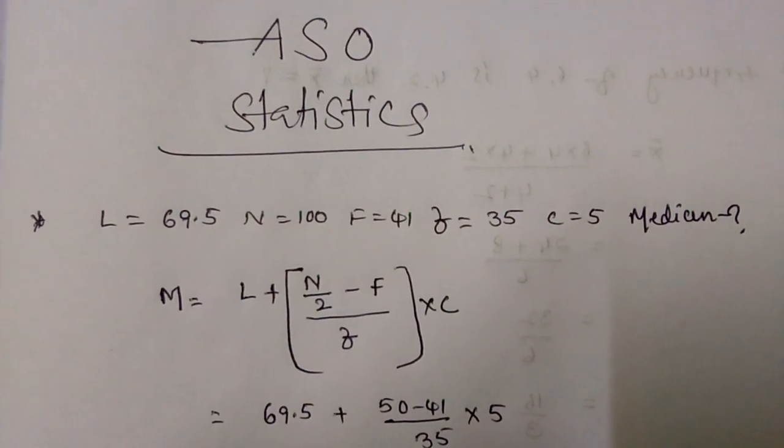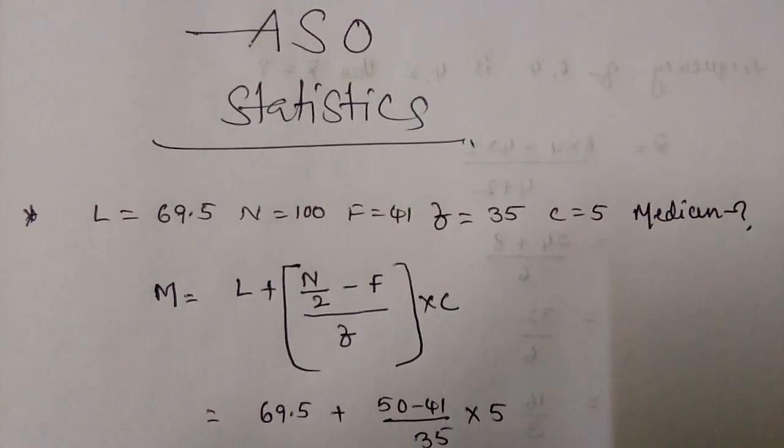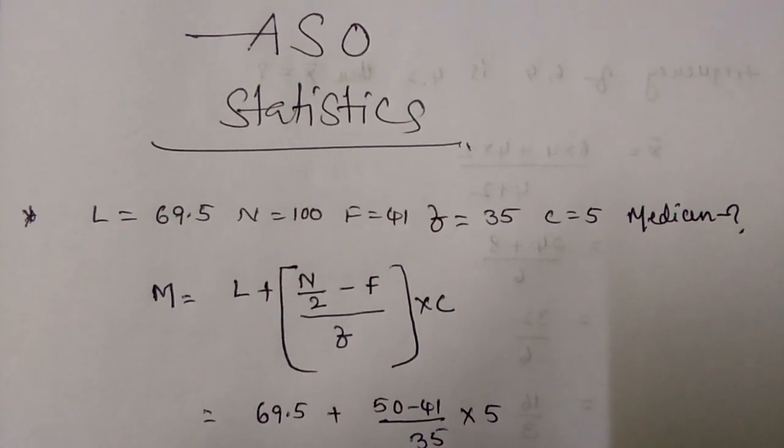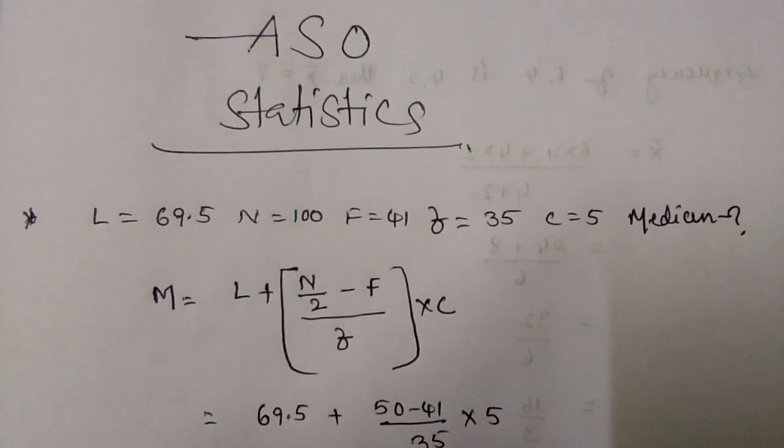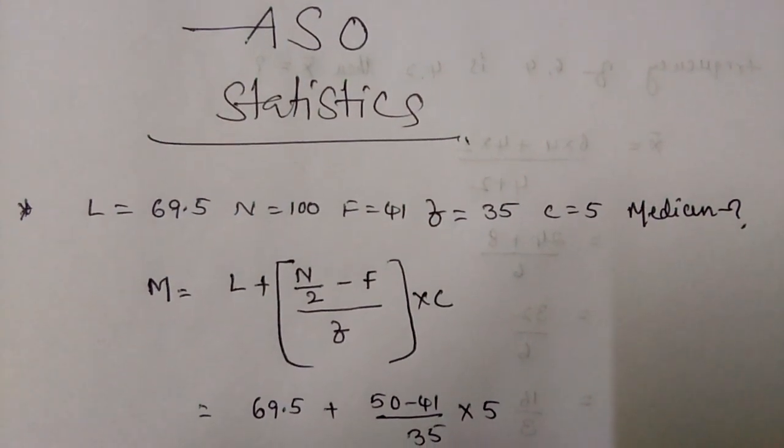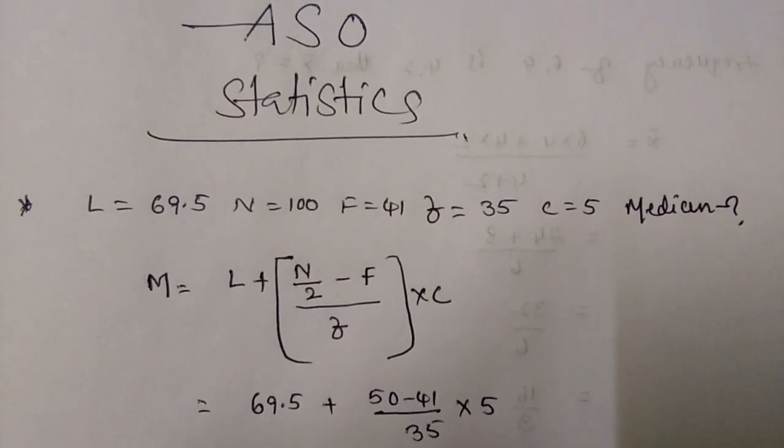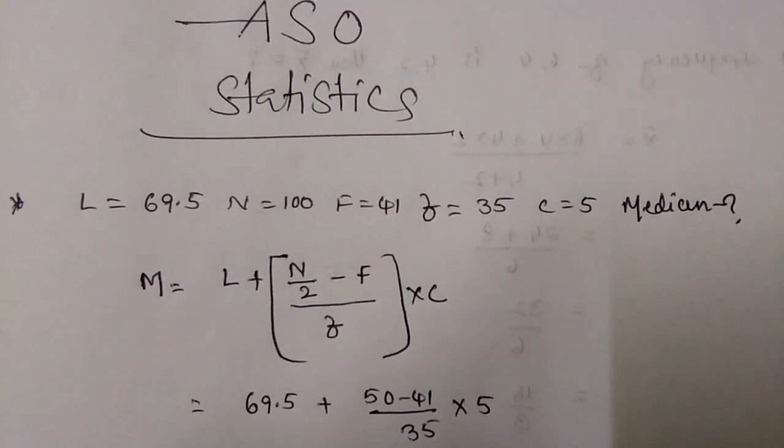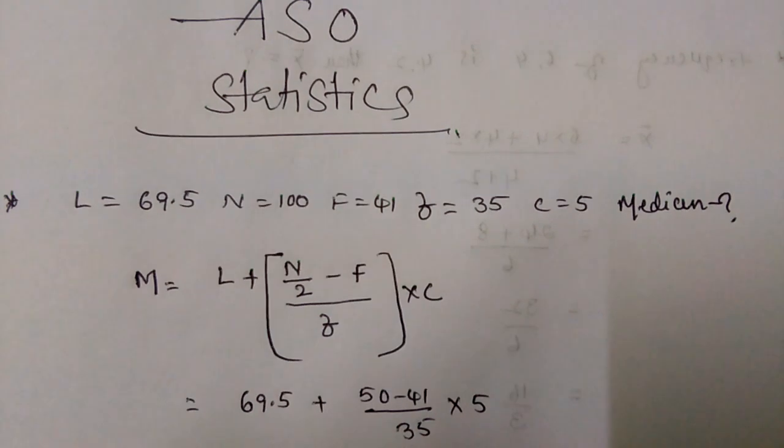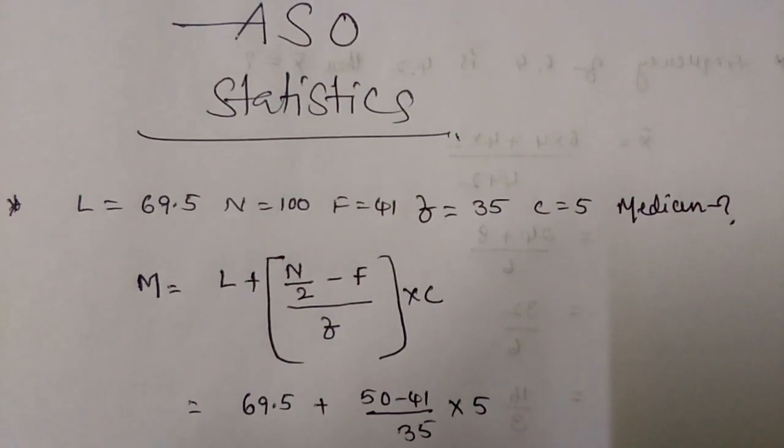So here L equals 69.5 plus N by 2, so 100 by 2 that equals 50, minus capital F, above the class is 41, then frequency is 35, into class interval is 5.